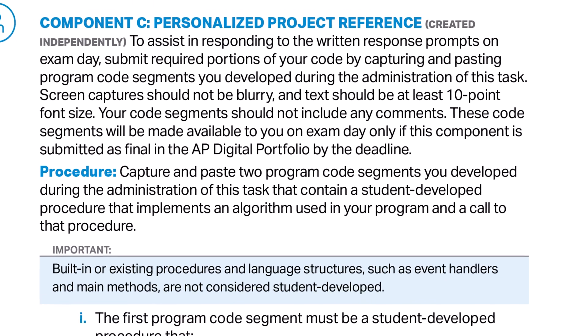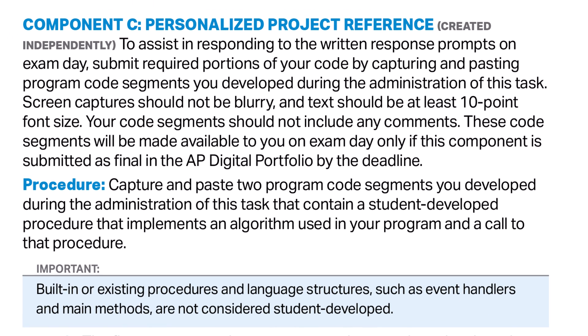Component C will contain selections of program code from your full program code in Component A. You will see the Component C code selections again when you take the AP test, so be prepared to answer questions about what they are, how they work, and what would happen in certain hypothetical situations. You must remove all comments before you submit code selections for Component C — you can leave the comments in Component A. Make sure the code segments are clear and legible. For more information on inserting code into the AP portfolio, check out resource number five.